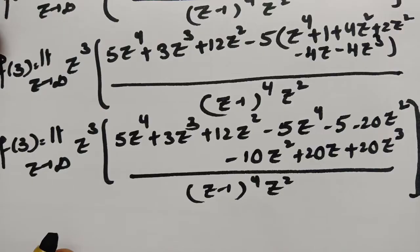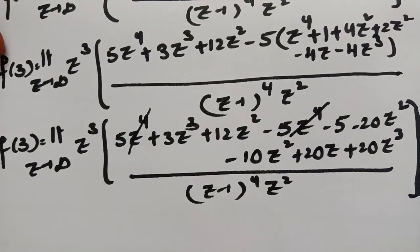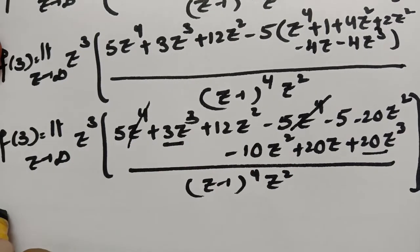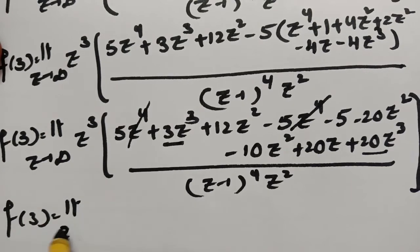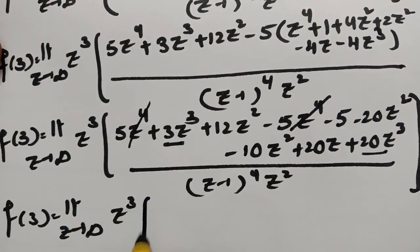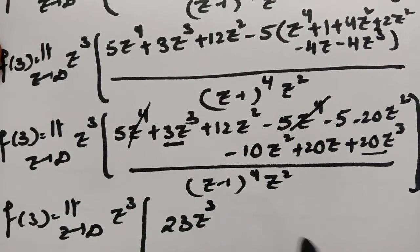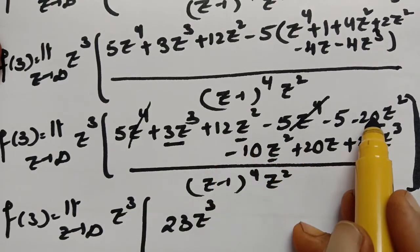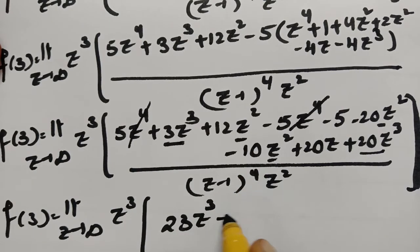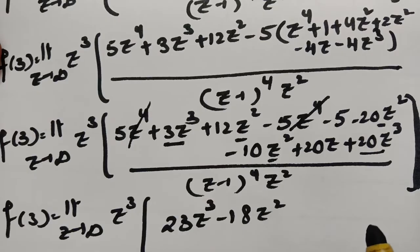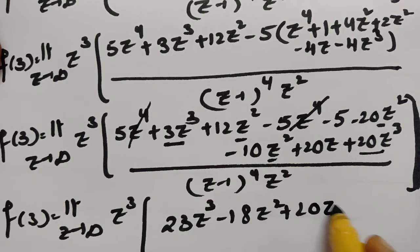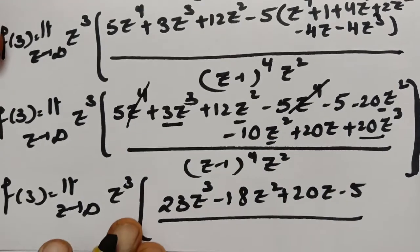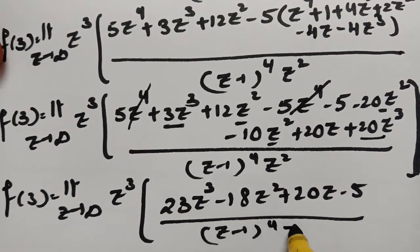So f(3) = limit z→∞ of z³·(23z³ − 18z² + 20z − 5) / ((z−1)⁴·z²). Taking z³ common from the numerator and z⁶ from the denominator, then cancelling z⁶ and substituting z = ∞: all 1/z terms → 0, leaving 23 / (1−0) = 23. Therefore f(3) = 23.